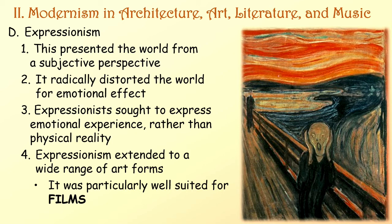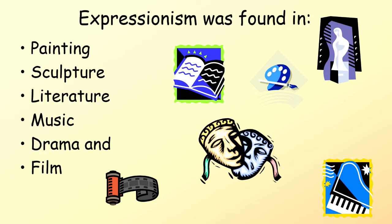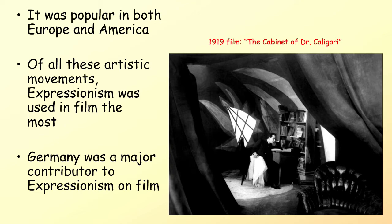Expressionism presented the world from a subjective perspective, radically distorting the world for emotional effect. Expressionists sought to express emotional experience rather than physical reality. Expressionism extended to a wide range of art forms and was particularly well-suited for films. It was an artistic movement that started in the late 1800s and peaked around the mid-1920s, found in painting, sculpture, literature, music, drama, and film. It was popular in both Europe and America, and Germany was a major contributor to Expressionism on film.